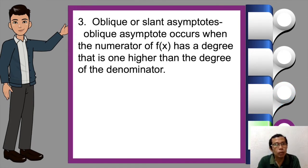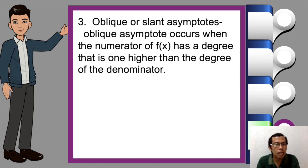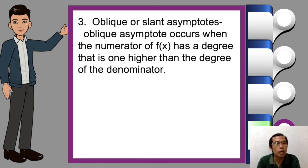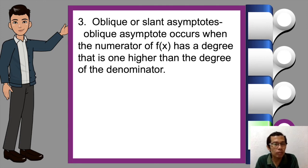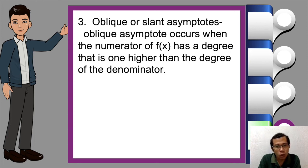And then the last one: oblique or slant asymptotes. Oblique asymptotes occur when the numerator of f(x) has a degree that is one higher than the degree of the denominator. In this situation, simply divide the numerator by the denominator using either long division or synthetic division.